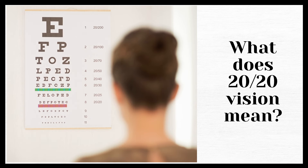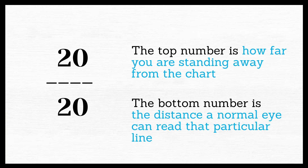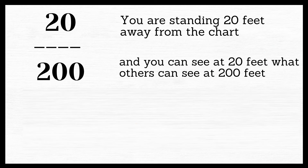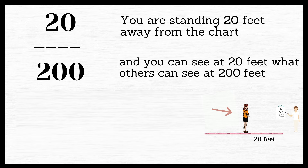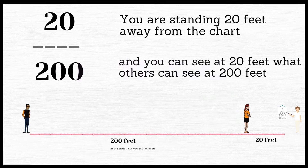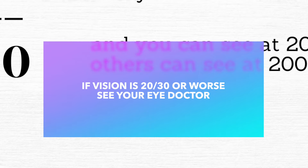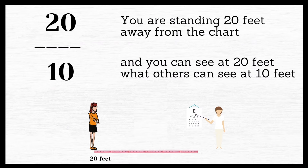So the real question is: what does 20/20 vision mean? The top number represents how far you're standing away from the chart, and the bottom number is the distance at which a normal eye would be able to read that particular line. For example, 20 over 200 means you're standing at 20 feet and can see what others can see at 200 feet — that is not very good. On the other end, 20/10 vision means you have better eyesight because another person would have to stand at 10 feet to see what you can see at 20.